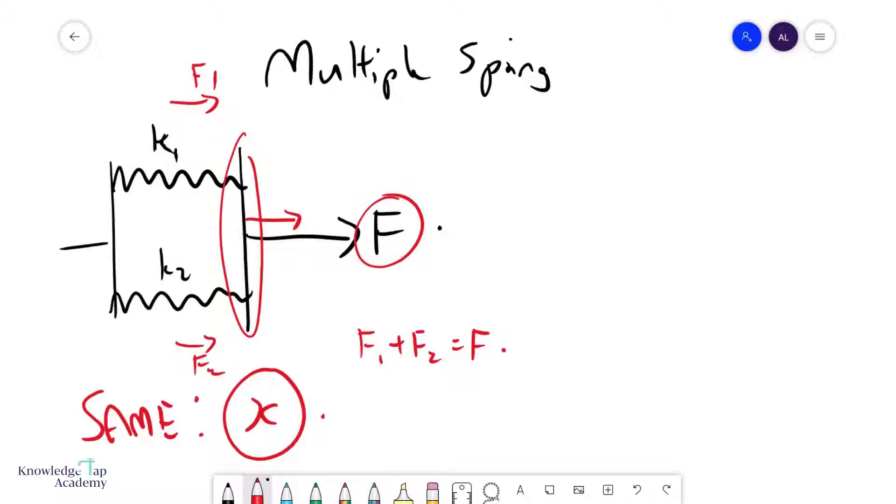So basically, I can say that k1 times x plus k2 times x must equal f. And so if I think about this now, you can see that I can